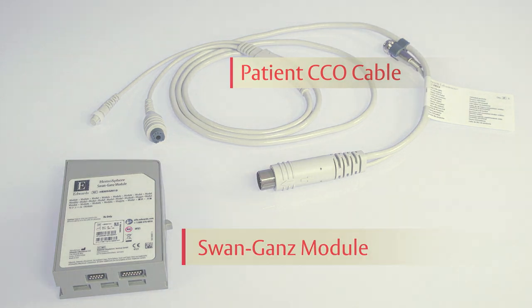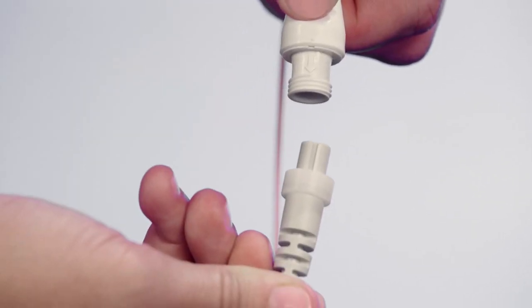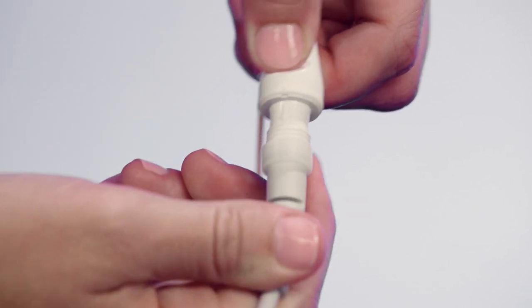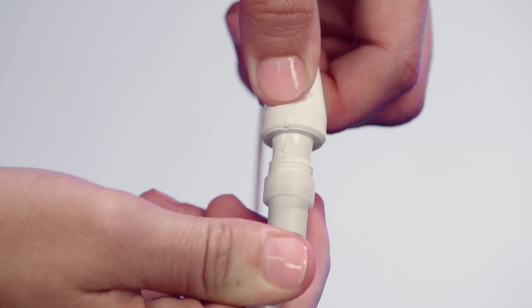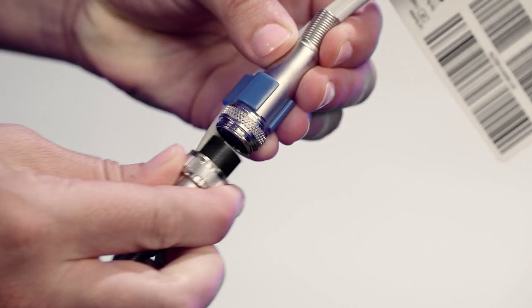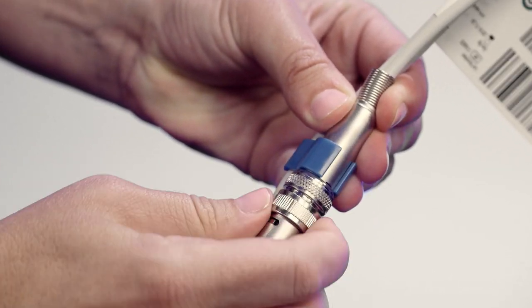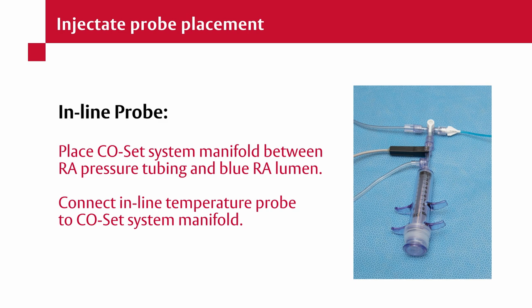Attach the catheter end of the patient CCO cable to the thermistor connector on the SWAN-GANZ ICO catheter. Connect the injectate temperature probe, inline or bath, to the silver connector of the patient CCO cable. If using an inline probe, connect the inline thermistor to a compatible pressure tubing manifold.